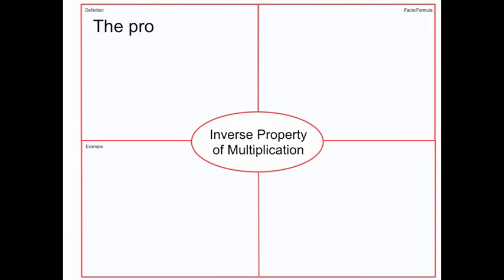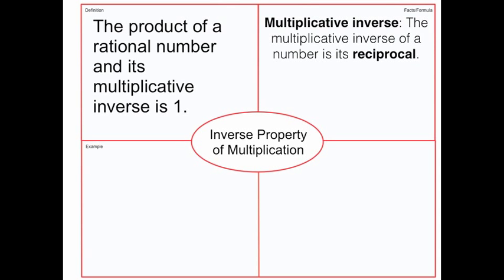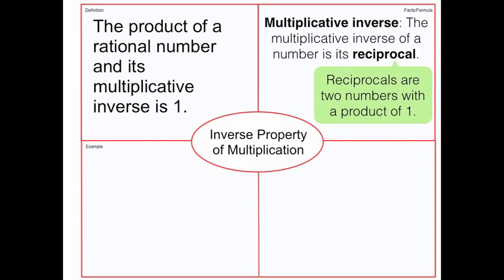Next is the inverse property of multiplication, which is the product of a rational number and its multiplicative inverse is one. Essentially, if you take a fraction and you multiply it by its multiplicative inverse, or otherwise known as a reciprocal, you're going to get one.